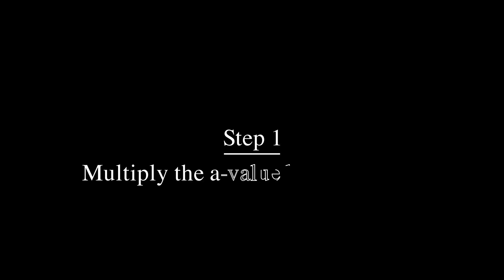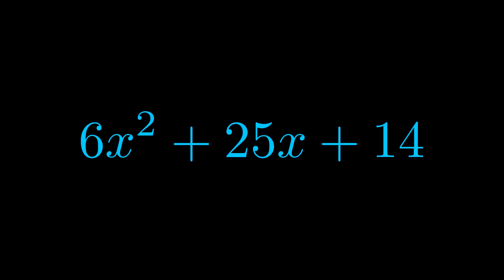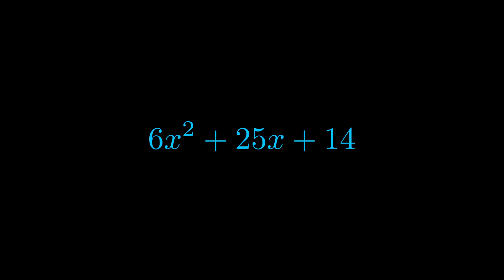Step one when factoring an equation of this form is to multiply the a value by the c value. Here we can see that our a value is the coefficient on the x squared term and our c value is the constant term.